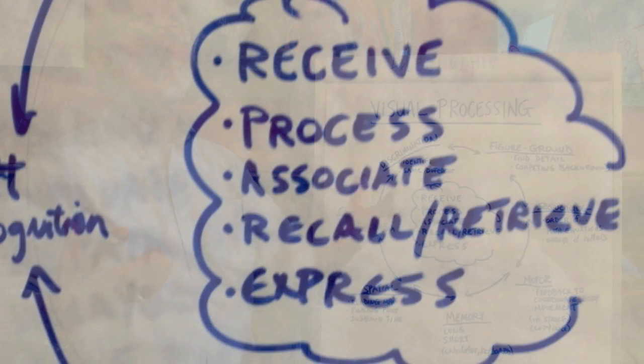First and foremost, we receive information through our eyes, through our visual sense. That information is then processed. We think about it and we organize it and we understand it in some way.